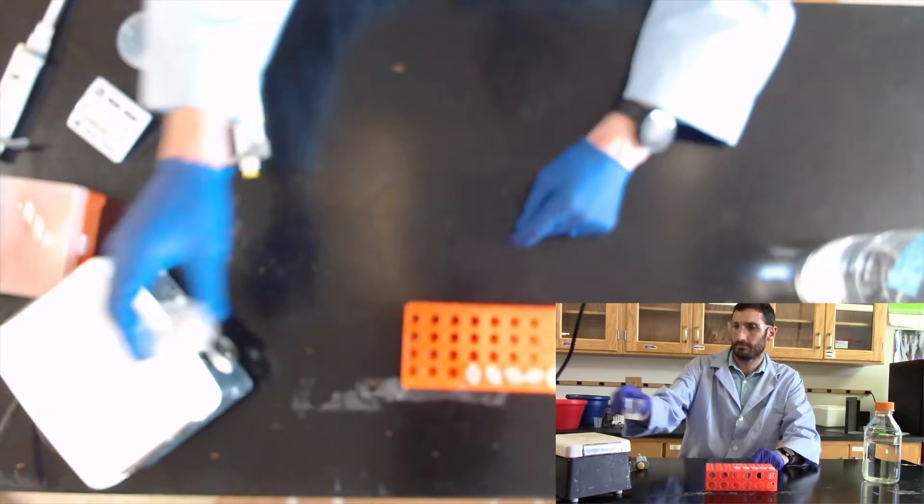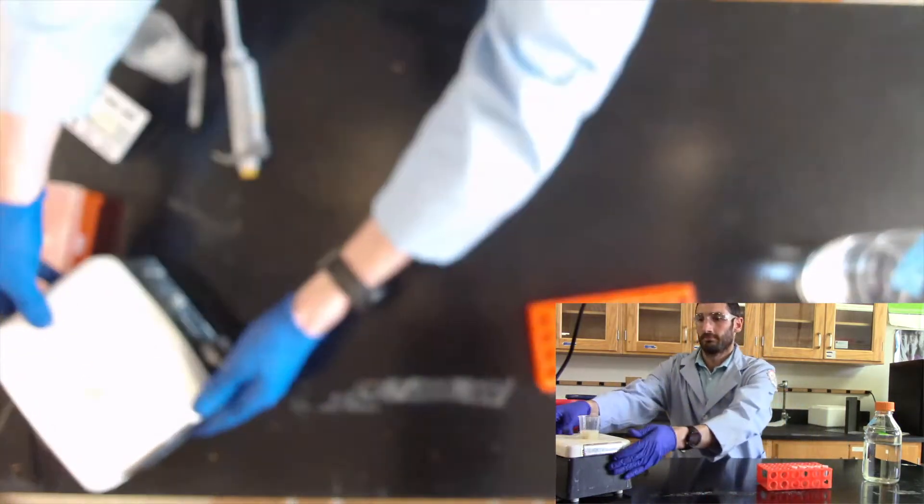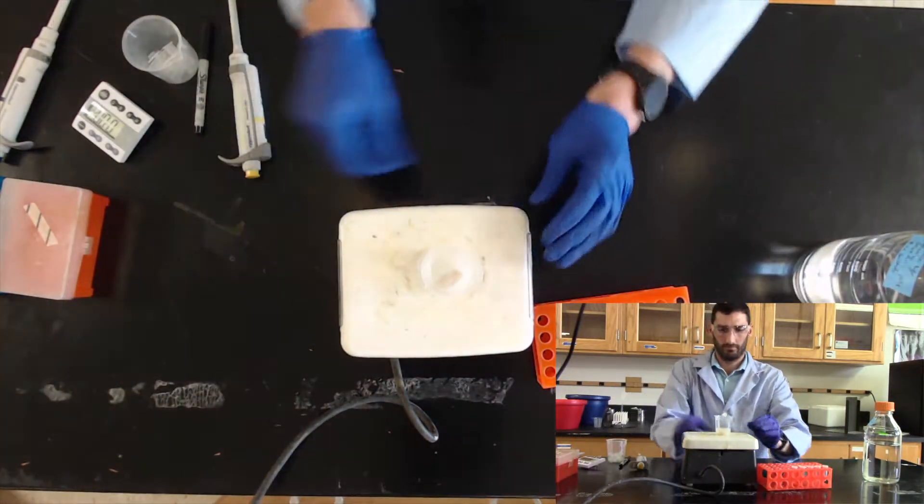Place the solution containing your buffer and cell pellet on a stir plate and stir the solution until it becomes homogeneous.